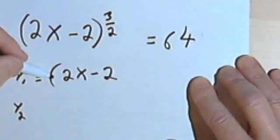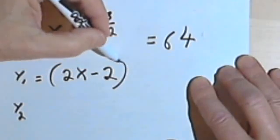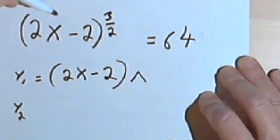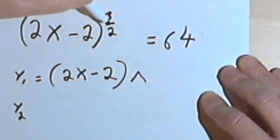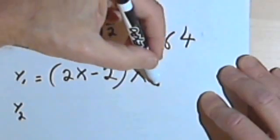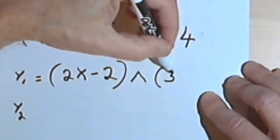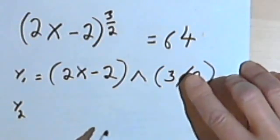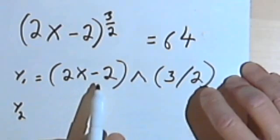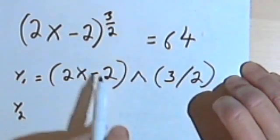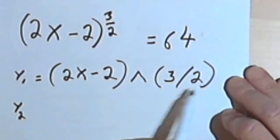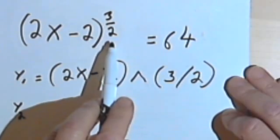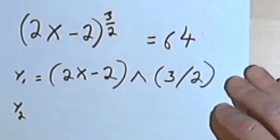So you're going to have parentheses, 2x minus 2, close the parentheses, then you want that little raise 2, the up arrow, and then you want the 3 halves. When you put in the 3 halves, make absolutely sure that that's in parentheses also. Otherwise the calculator is going to think that what you want to do is take the 2x minus 2 and raise it to the third power, and then take the answer and divide it by 2. So be careful when you put in things into your calculator. Especially if you have fractions, it's usually the safest thing to put fractions in parentheses.